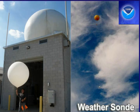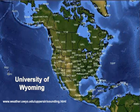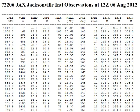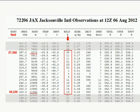The University of Wyoming is one place that aggregates the weather sonde data from over 70 sites around the United States. Here's an example of a report from Jacksonville International showing below 25% relative humidity for nearly every data point above 27,000 feet.